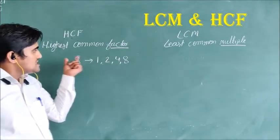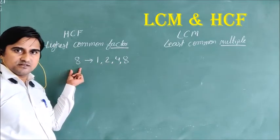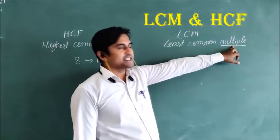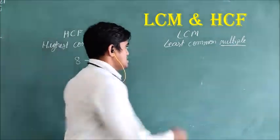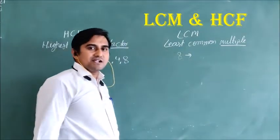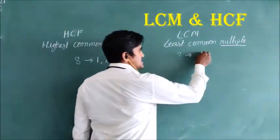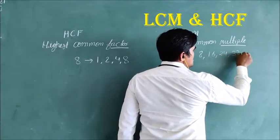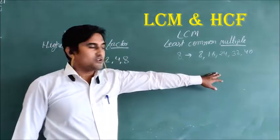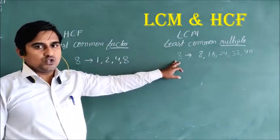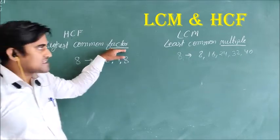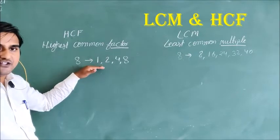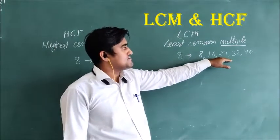Now let us look at multiples. Multiple means the multiples of 8 are: 8, 16, 24, 32, 40. These are the multiples of 8. So all of you understand about factors and multiples. These are the examples of multiples.